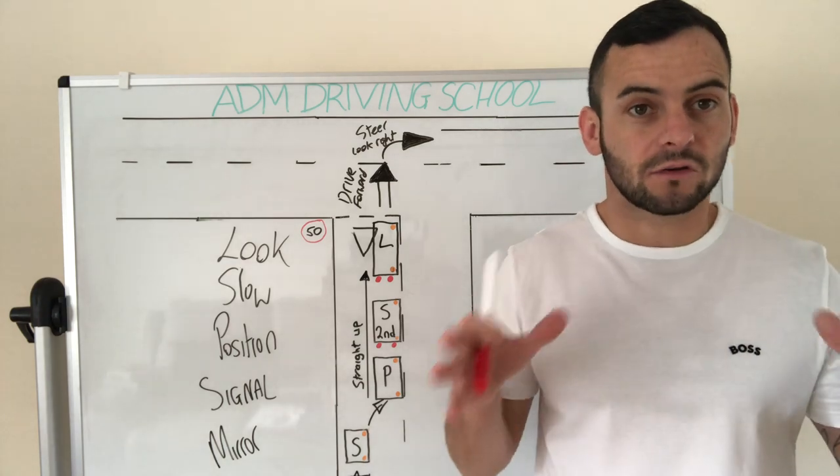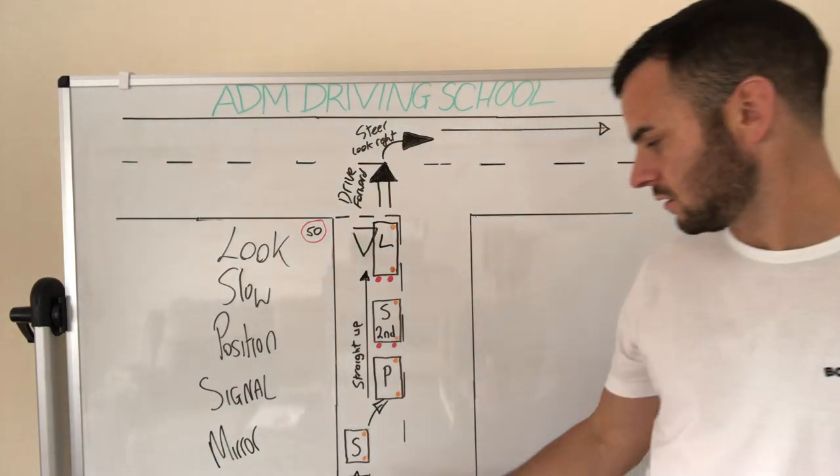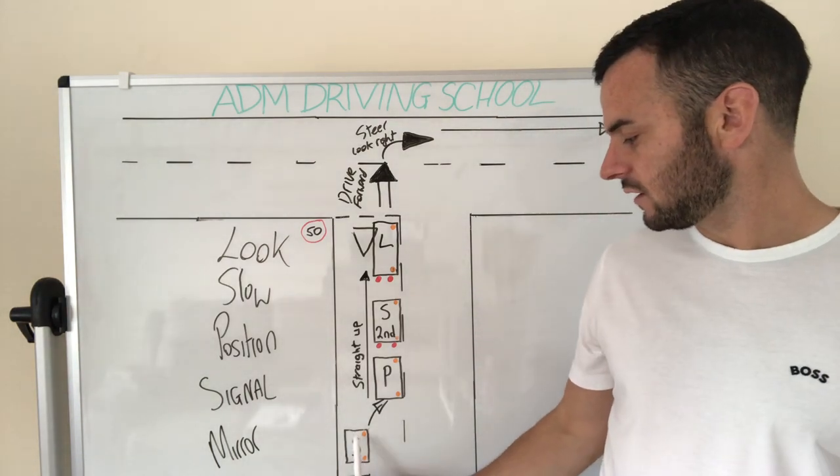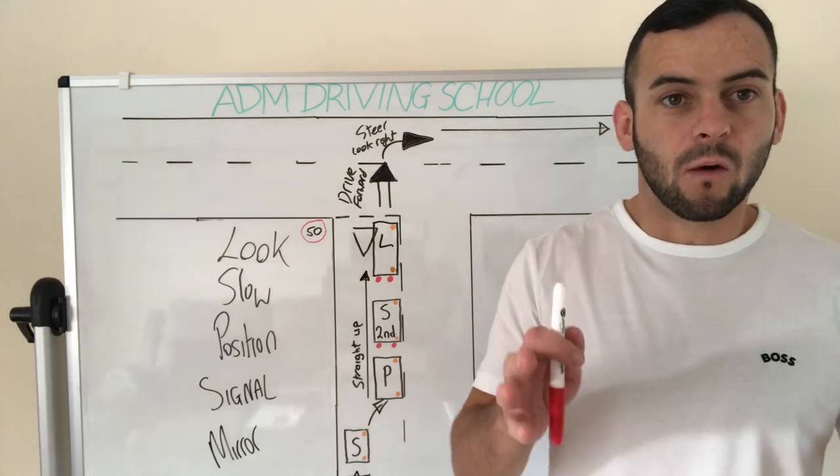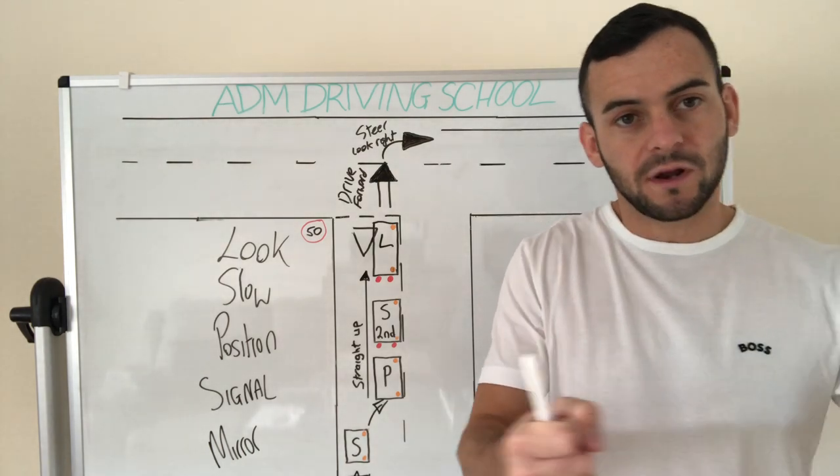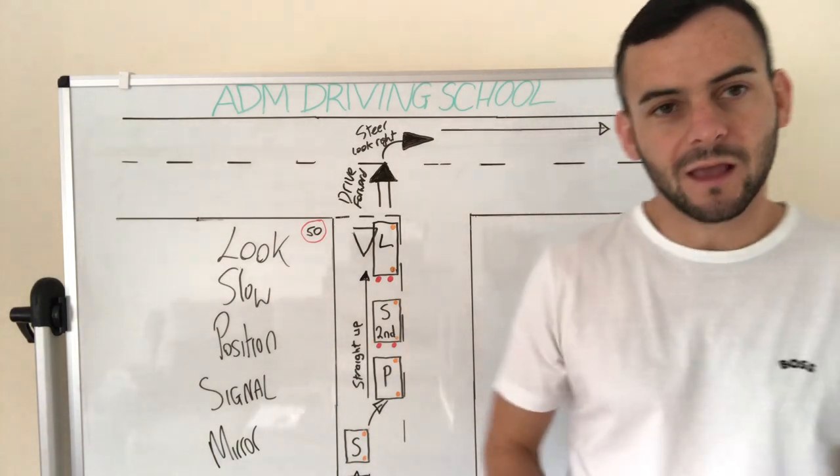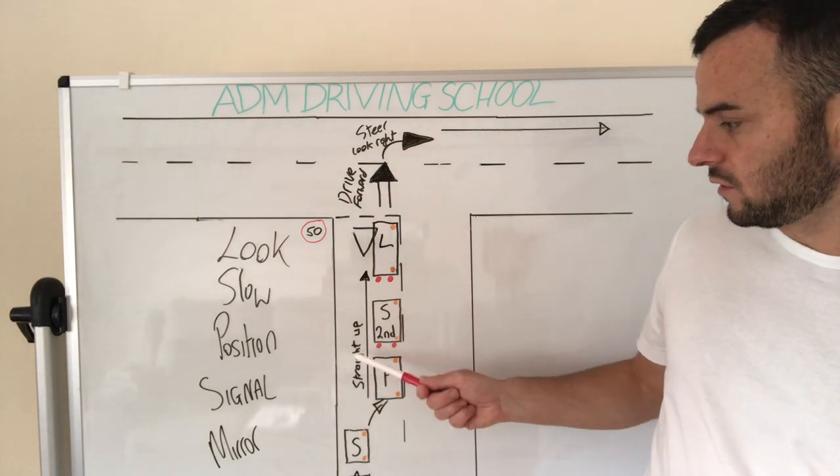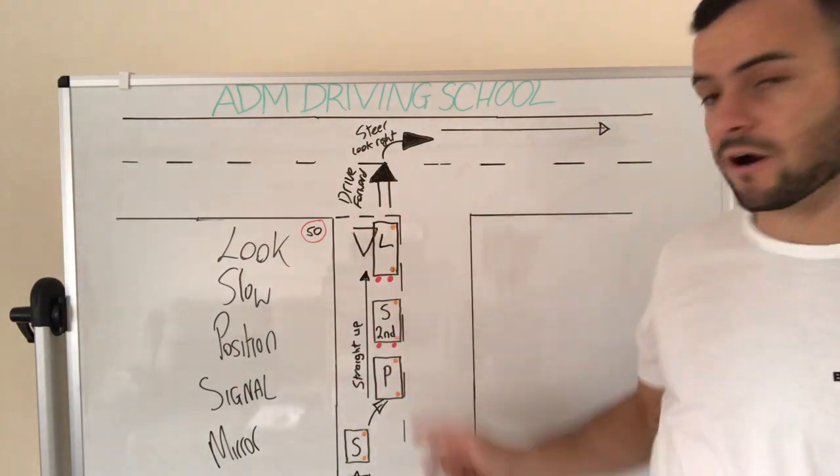When you get the direction that you're turning right you're going to go inside mirror then right mirror. Once you've done that, signal to the right or indicate right. Once we've done that we gradually bring our position over towards the centre line and straight up. Very important. Straight up to the junction here.